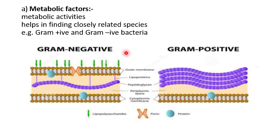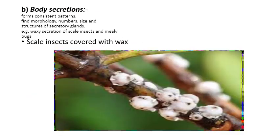Here is a picture representation of physiological factors. Number one is metabolic factors — metabolic activities help in finding closely related species, for example gram-positive and gram-negative bacteria. Number two is body secretion, which forms consistent patterns. The morphology, number, size, and structure of secretory glands are examined. For example, the waxy secretion of scale insects and mealybugs — scale insects covered with wax, as shown in the picture.